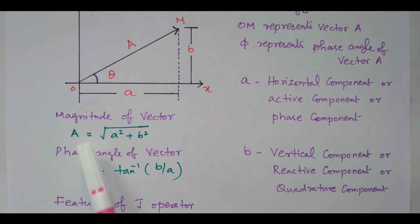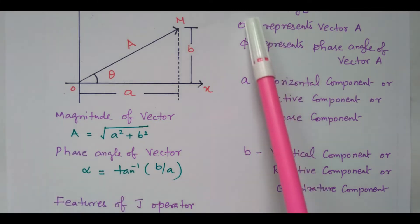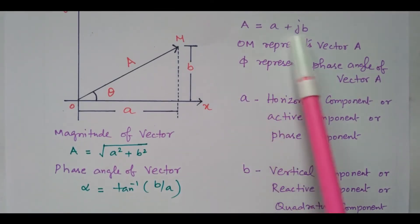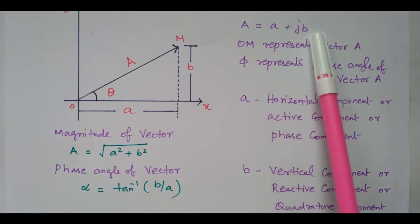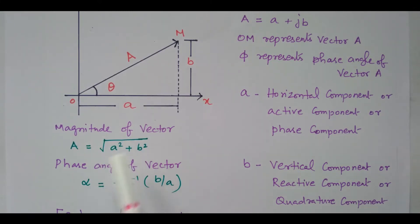It is also represented in two other forms: magnitude and angle. How will you find the magnitude from this equation A equal to a plus Jb? For this equation, how will you find the magnitude and phase angle? Magnitude equals square root of A squared plus B squared, that is square root of real term squared plus imaginary term squared.